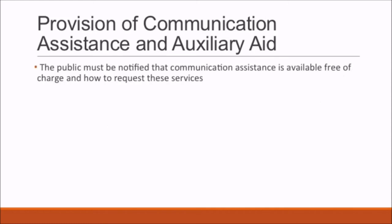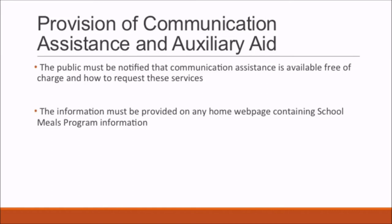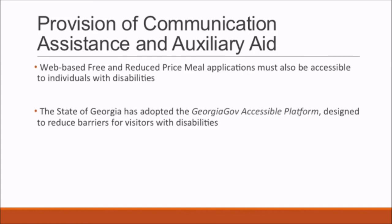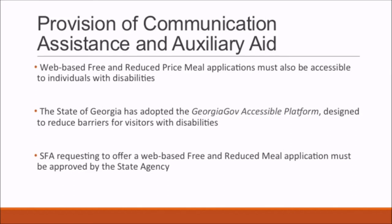The public must be notified that communication assistance, including the provision of auxiliary aids, is available free of charge and how to request these services. This information must be provided on any home web page containing school meals program information. Web-based free and reduced price meal applications must be accessible to individuals with disabilities. The state of Georgia has adopted the GeorgiaGov Accessible Platform, designed to reduce barriers by implementing requirements for an inclusive, accessible online experience for users with assistive technology. If an SFA is requesting to offer a web-based application, it must be approved by the state agency.